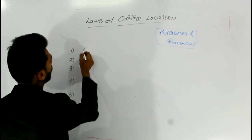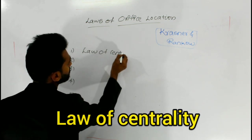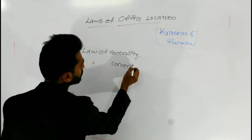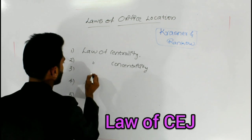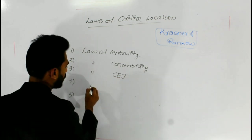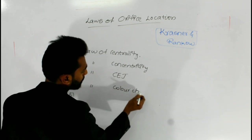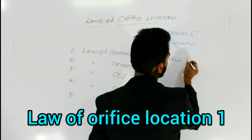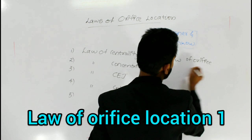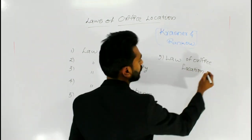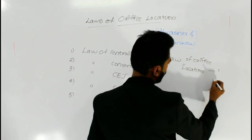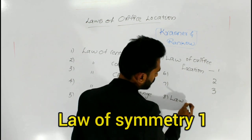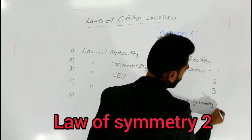One is law of centrality, law of concentricity, law of CEJ, law of color change, law of orifice location 1, law of orifice location 2, law of orifice location 3, and law of symmetry 1 and 2.